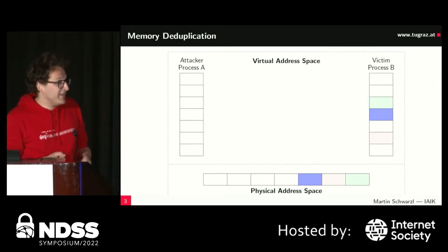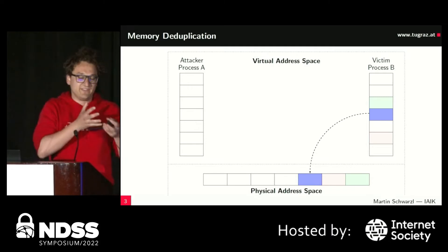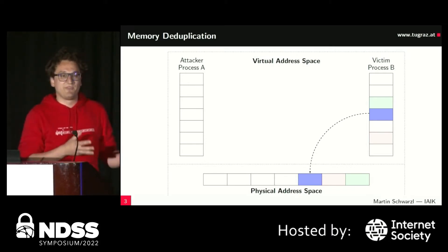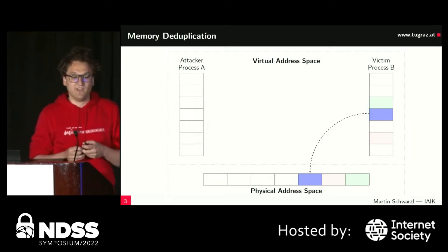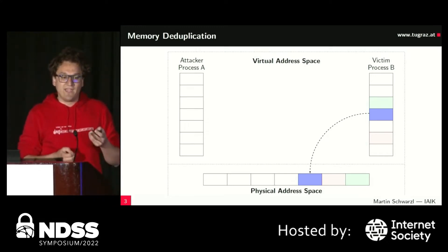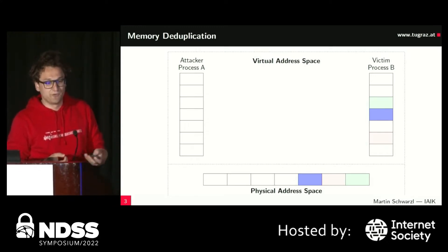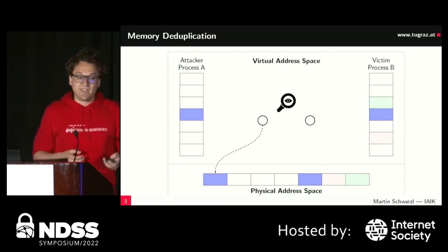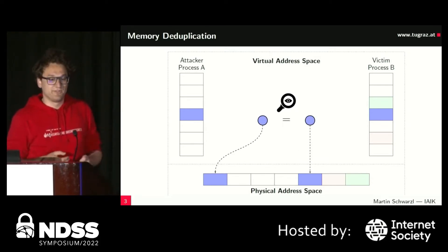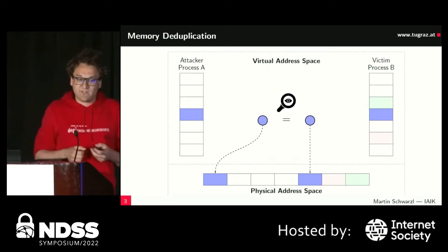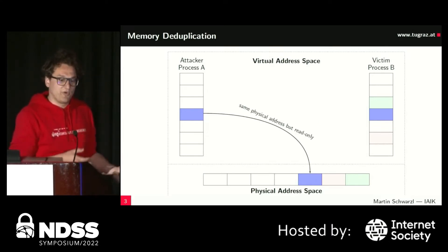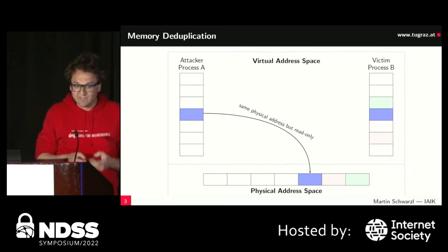So what is memory deduplication and how would someone exploit it? Consider two processes, process A and B, with something mapped into physical memory resident in RAM. The attacker tries to guess the content — in this case, the blue page — while a kernel thread scans over all pages. If an identical one is found, the physical frame number is replaced, and they now point under copy-on-write semantics to the same physical page.